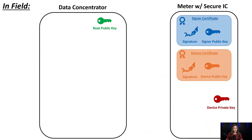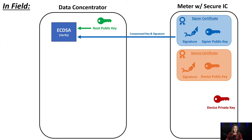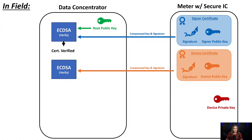For the in-field execution of this use case, when the meter wants to send a JSON message to the data concentrator, it will first send its signer certificate with the signature and public key to the data concentrator, where the data concentrator will run it through an ECDSA verify function with the root public key to verify that the signer certificate was signed by the root private key. Next, we'll do the same thing for the device certificate — the meter will send its device certificate and we'll take the signer public key from the signer certificate received earlier.